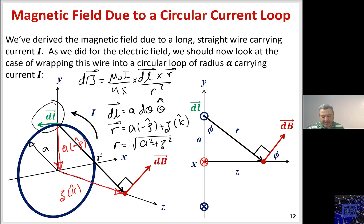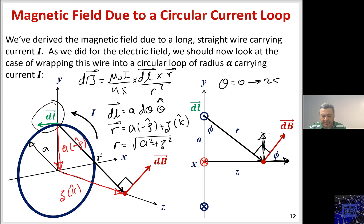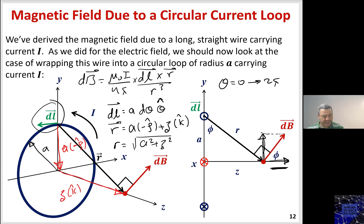One component due to symmetry will cancel when integrating θ from 0 to 2π, and we are left only with the component along the k̂ (z) direction. The dB vector projects into two components — one along ρ̂ and one along k̂. Due to the symmetry of the loop, the ρ̂ component cancels upon integration and only the k̂ component survives. Try doing it on your own, and you will end up with the resulting expression.